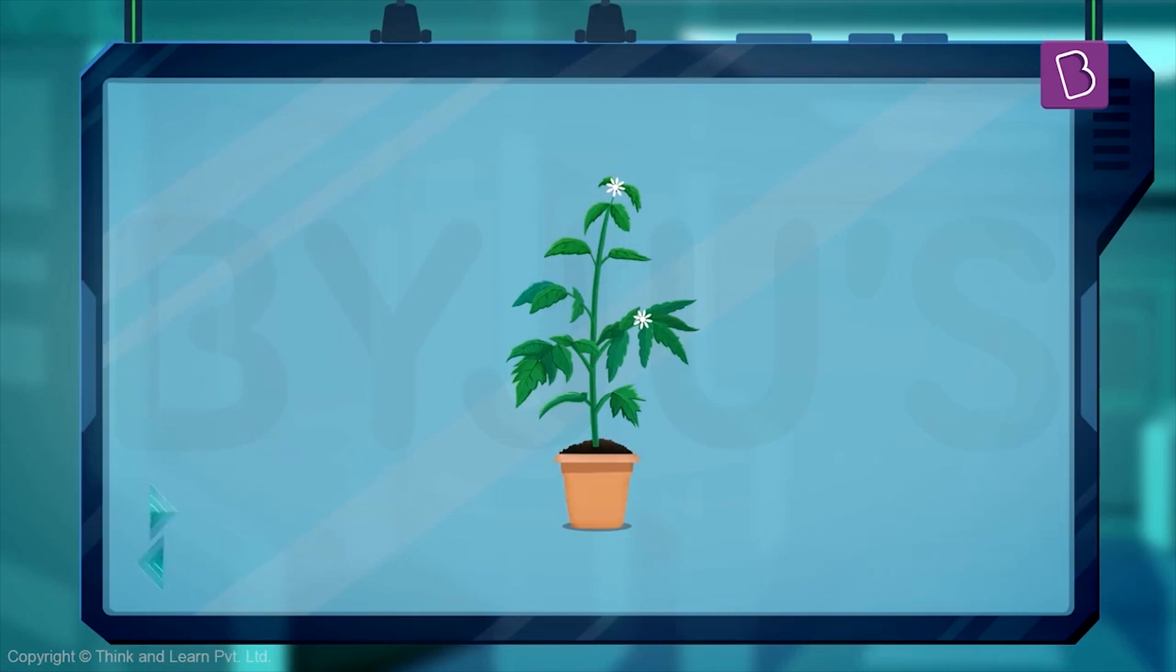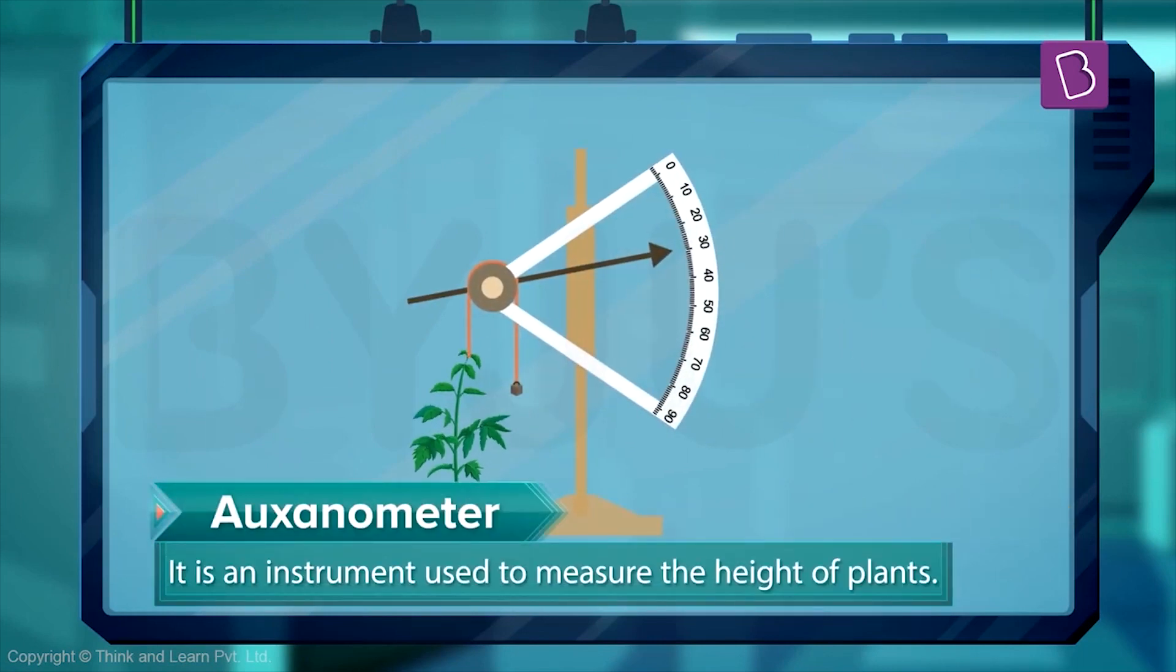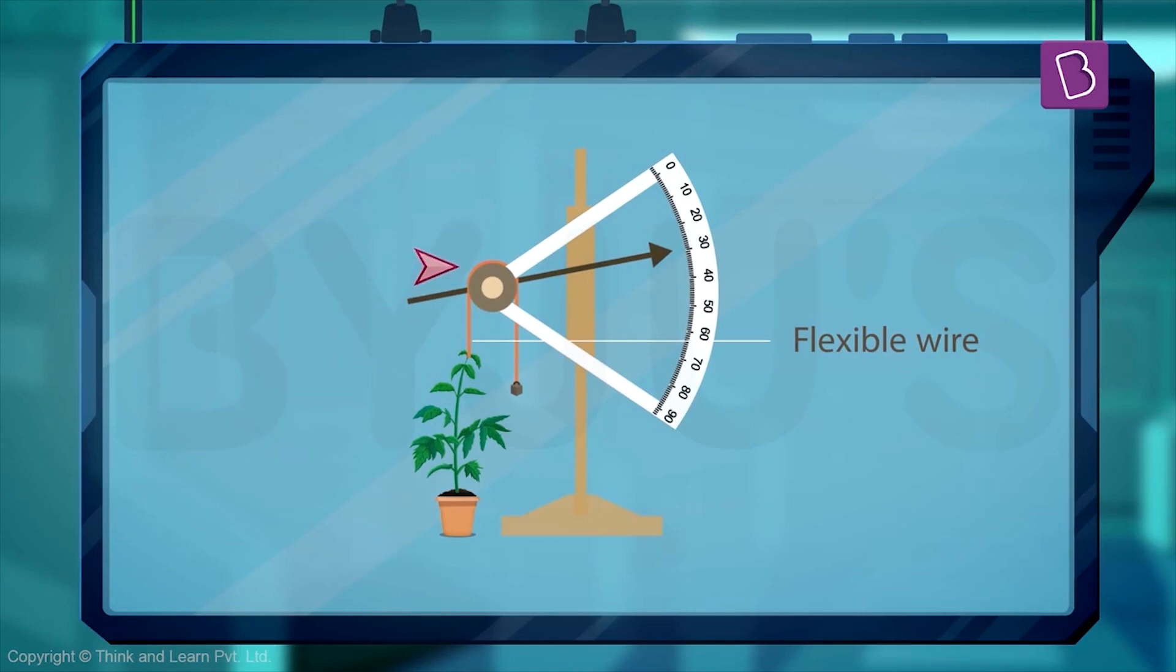So to really see how much it's growing, we use an instrument called an auxanometer. This meter consists of a flexible wire that goes over a pulley and is attached to an indicator. This indicator is on a curved scale that looks like an arc. Now, how this works is: let's say you have a really young plant, and then that wire is attached to the top of the plant.